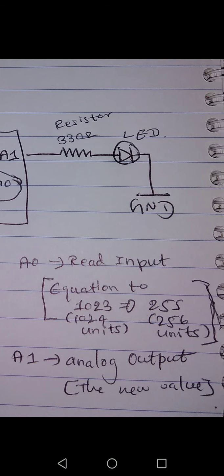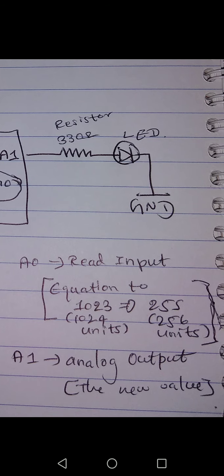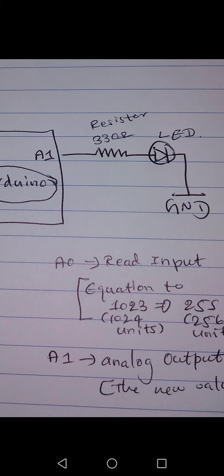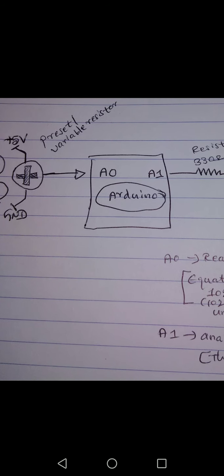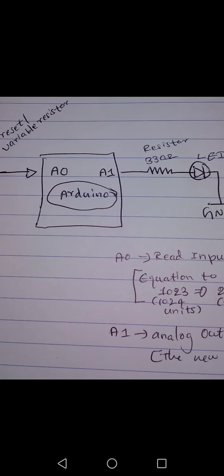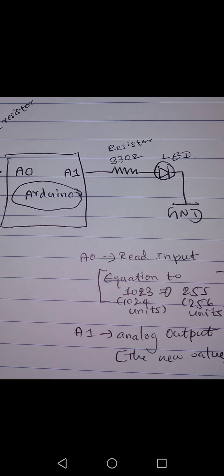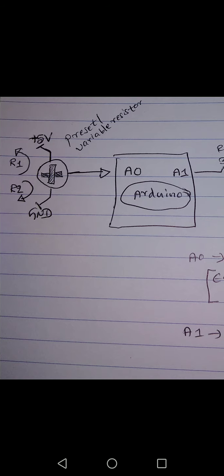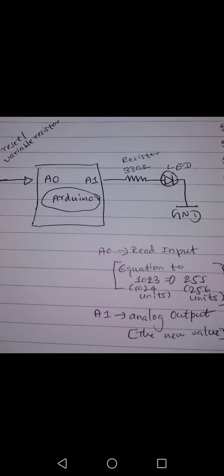The result of the equation is passed to the A1 analog output. So 1023 input is converted to 255 output, and 255 gives the LED maximum brightness. When you rotate the variable resistor the other way, the equation runs again, the converted value is passed to the analog output, and the LED's brightness decreases. Rotating one way increases brightness; rotating the other way decreases it.